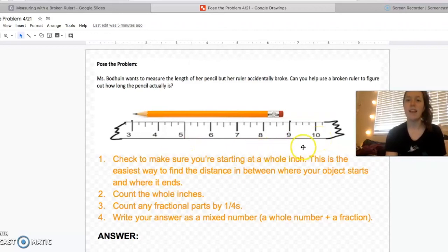If you said any of these numbers that are labeled on the ruler, you're right. Three, four, five, six, seven, eight, nine, ten. Those are all whole inches because they're not fractional parts of inches. They're whole inches. All right. So I need to check to make sure my pencil starts at a whole inch. It looks like it lines up with three and three is a whole inch. So that works. This is the easiest way to help us find the distance in between where our object starts and where it ends.